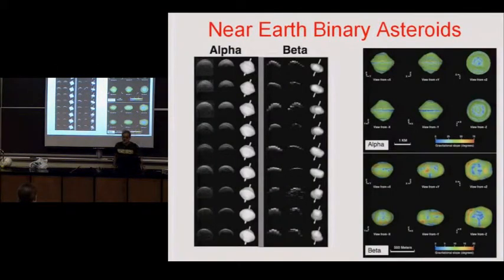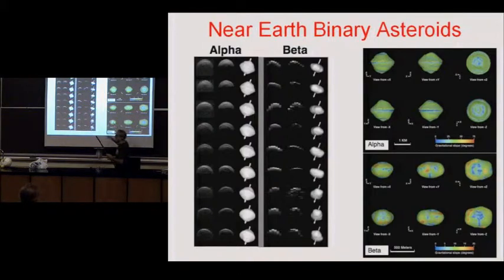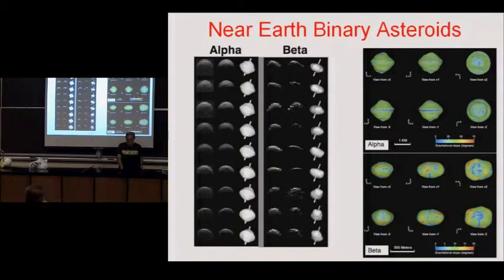This is an example of the sort of things you can learn from this type of data. You can make models of the shapes of the individual objects, get the rotations at different phases, and make three-dimensional models viewed from different axes. The radar is actually the best data we have, better than current optical data.